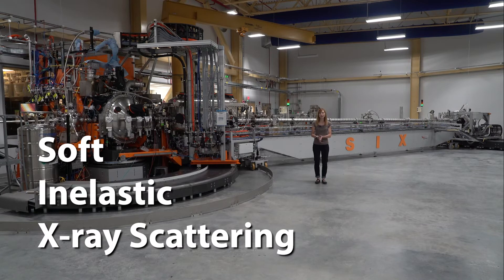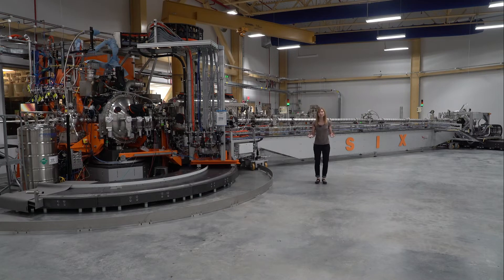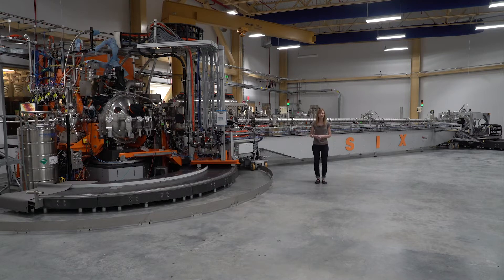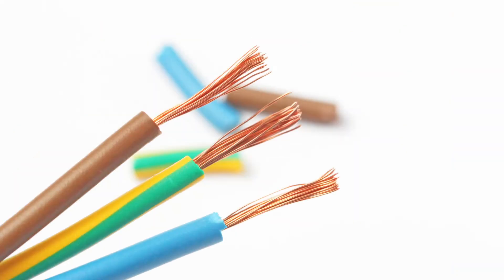So now we're standing at the SIX beamline which is a huge beamline. SIX stands for soft inelastic x-ray scattering and this type of beamline is used to study things that we call quantum materials. Quantum materials are these next generation materials that we can use for many things but we want to understand how the electrons move inside of these quantum materials.